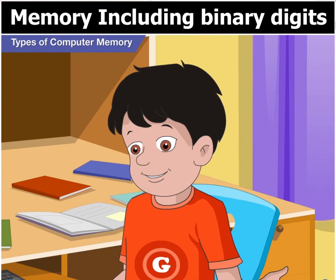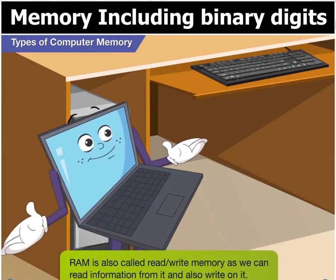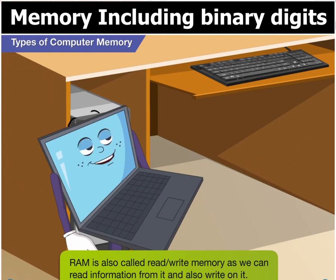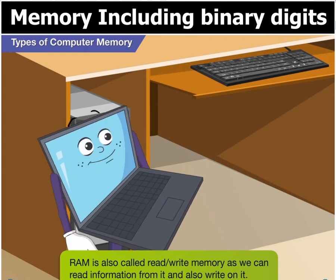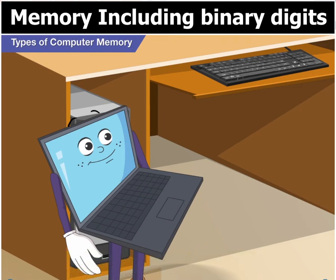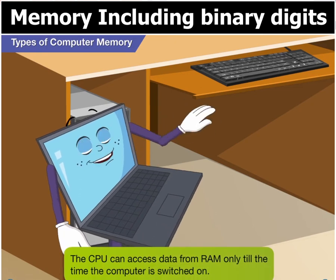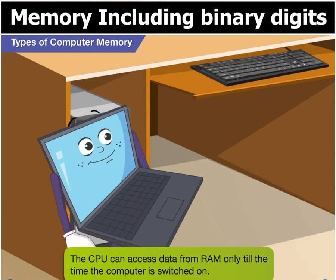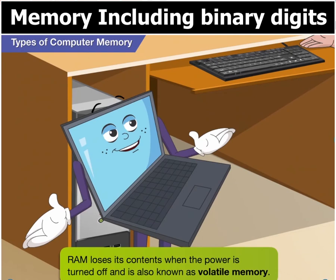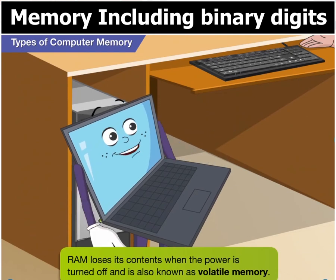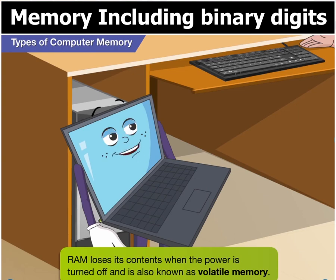So that is what RAM is in a computer. Yes, RAM is also called read or write memory as we can read information from it as well as write on it. The CPU can access data from RAM only till the time the computer is switched on. Because RAM loses its contents when the power is turned off, so it is also known as volatile memory.